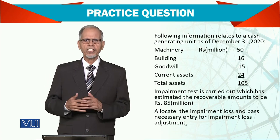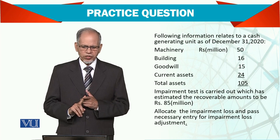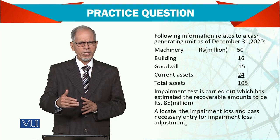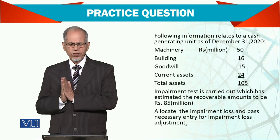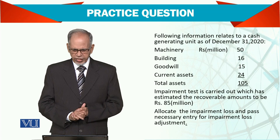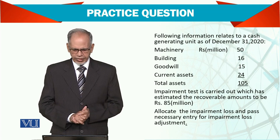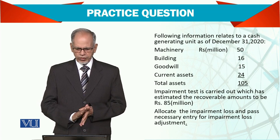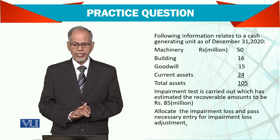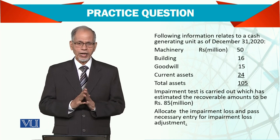That unit contains building, machinery, goodwill, and current assets — there can be many more, but here I have taken only four. The machinery is $50 million, building is $16 million, goodwill is $15 million, and current assets are $24 million. That is the carrying value given in the balance sheet.